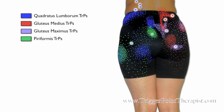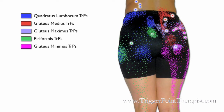And next in green are the piriformis trigger points. These trigger points refer pain strongly to the greater trochanter and to the sacrum. In pink, we have the gluteus minimus trigger points. These two sets of trigger points can cause sciatica symptoms either down the back of the leg or the side of the leg.